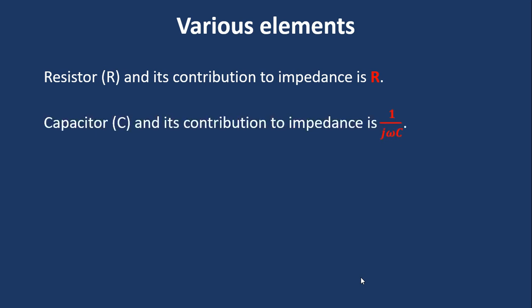Next is capacitor. It is denoted by C, and its contribution to impedance is 1/(jωC). Here ω is the angular frequency and C is the value of the capacitor. So if you want to know more you can see our previous video about various types of capacitors.